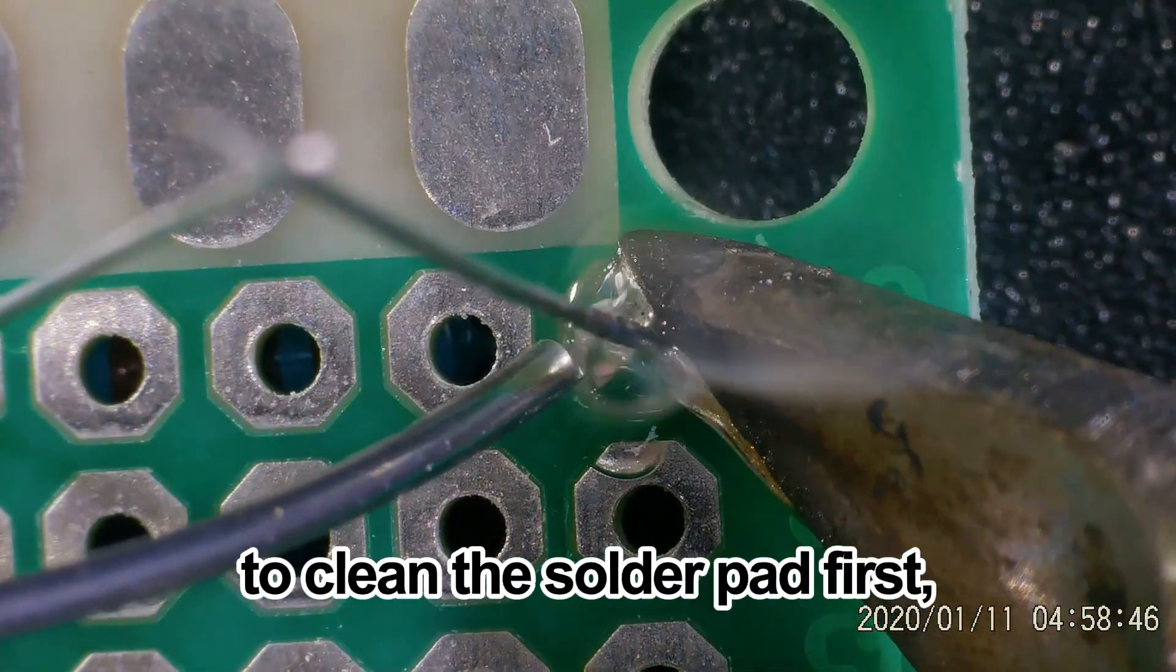The correct soldering method is to clean the solder pad first, heat the solder pad and device pins simultaneously with a soldering iron tip, and then add tin.